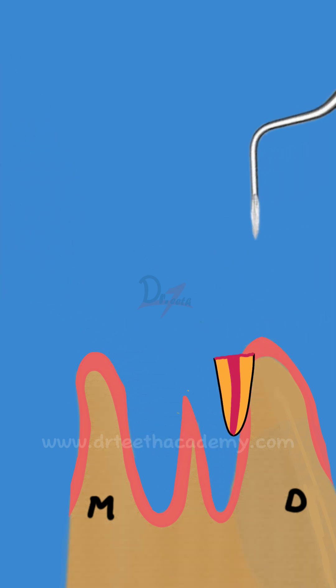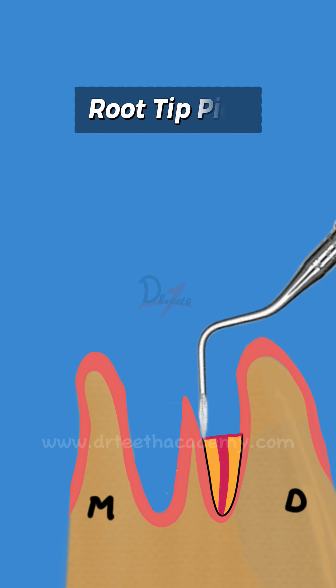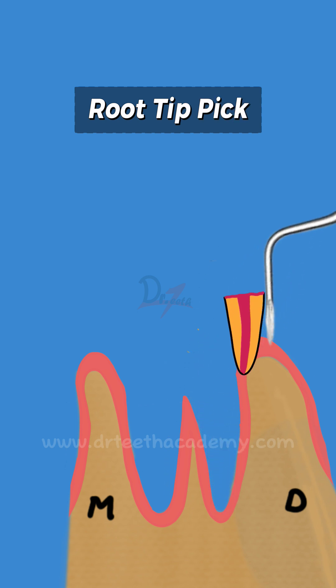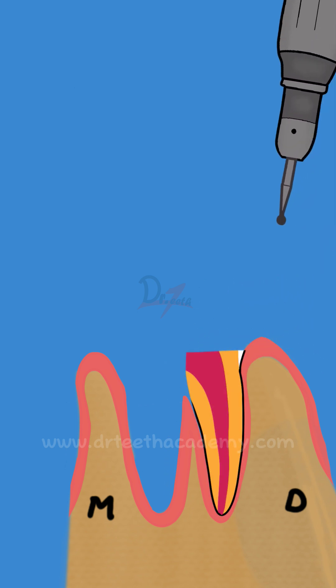Then other method is using an instrument called root tip pick. This is a very tiny instrument. You have to make sure you don't apply a lot of force.